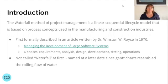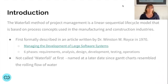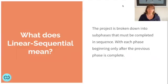When it was first documented, six phases were defined: requirements analysis, design, development, testing, and operations. We typically follow seven phases now, and you will see a variety of different documentation that ranges between five and seven phases.